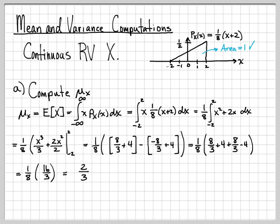Part of the reason we picked this specific probability density function is that it's easy to work with, reducing to integrals of polynomials. We've computed the mean of this random variable x as 2/3. Looking back at the PDF, this seems reasonable — the PDF is somewhat symmetric about zero but its density is heavier on the right side. So a mean at 2/3, just a little bigger than zero, is a reasonable answer for the average value of this random variable.